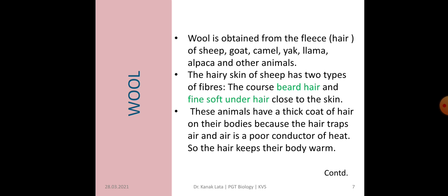Now let us see about wool. As we have discussed, different animals produce wool: sheep, goat, camel, yak, llama, alpaca, and some other animals also. This wool is obtained from the fleece of these animals. Fleece is the thin layer of skin consisting of hair. The hairy skin of sheep has two types of fiber — one is the coarse fiber and the other is the soft fiber. Coarse fiber is the beard hair, and soft fiber is the under hair that is close to the skin.